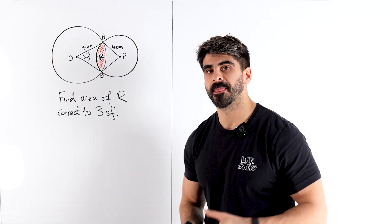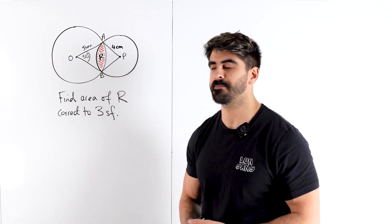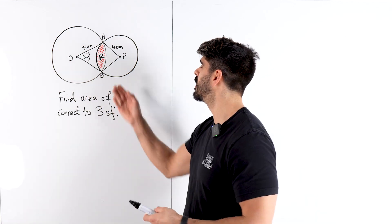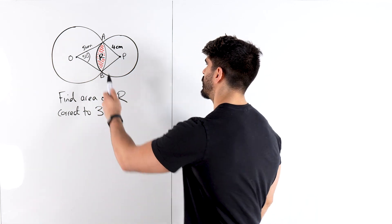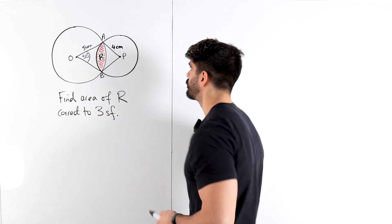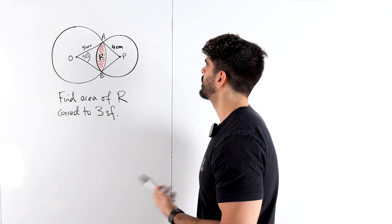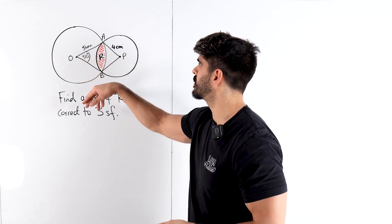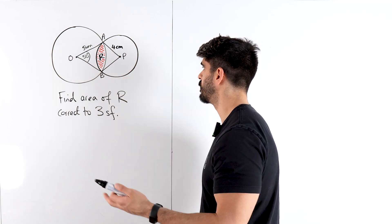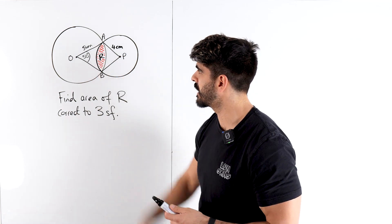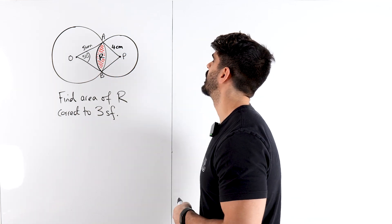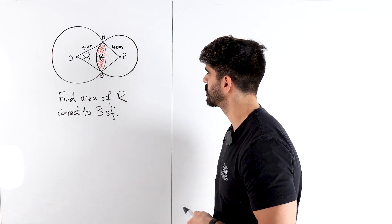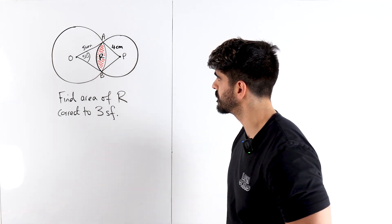So what have we got? I've obviously cropped out a lot of the text in this question. They've said there are two overlapping circles with a common region R. They've told us the radius of the big circle is five, the radius of the small circle is four. We've got this angle of 50 degrees, and then it says find the area of R correct to three significant figures.